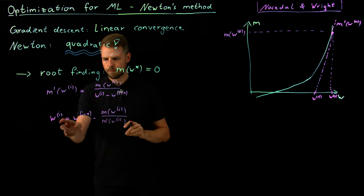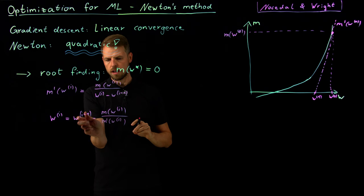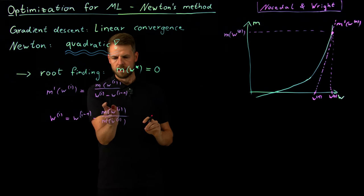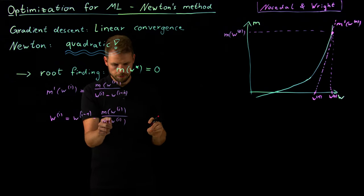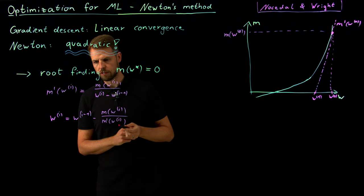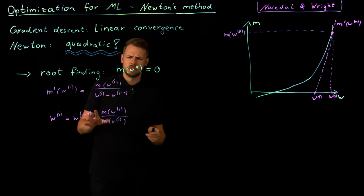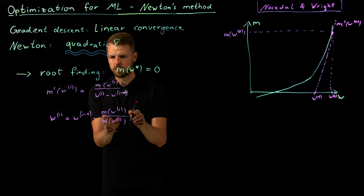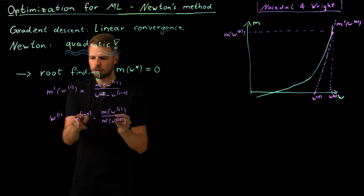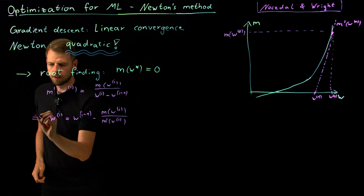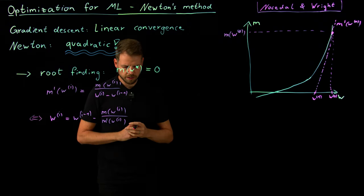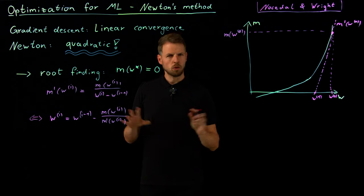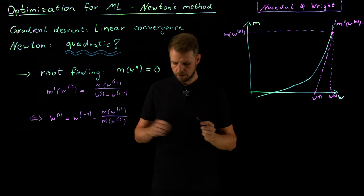So let's have a look at this. We have that our updated weight is the previous weight minus the function value divided by the derivative of the function value. And so this really reminds us of gradient descent. Seems like an iterative update. So an easy rephrasing of this one gives us this here. And we see, this looks fairly similar to optimization.